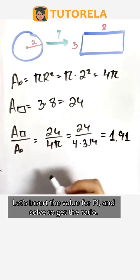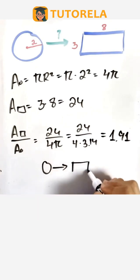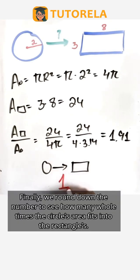Let's insert the value for pi and solve to get the ratio. Finally, we round down the number to see how many whole times the circle's area fits into the rectangle.